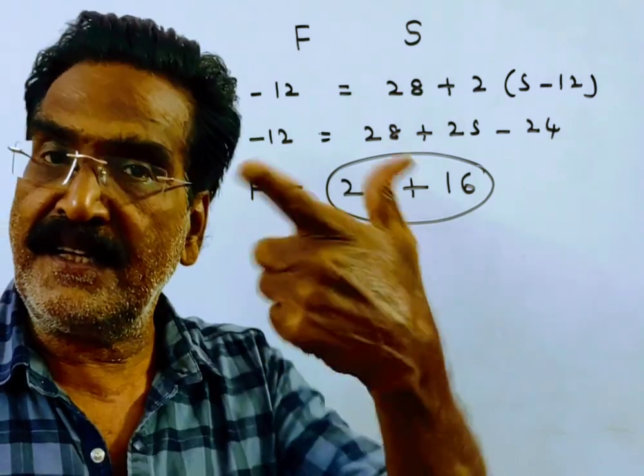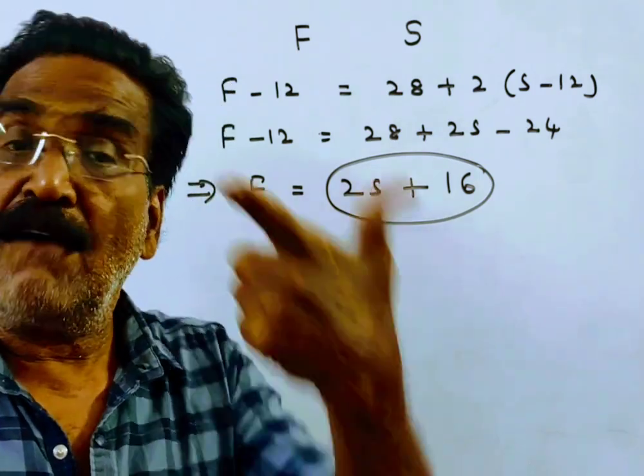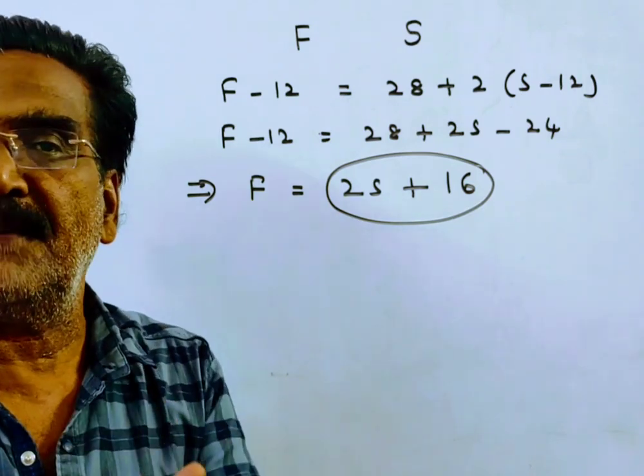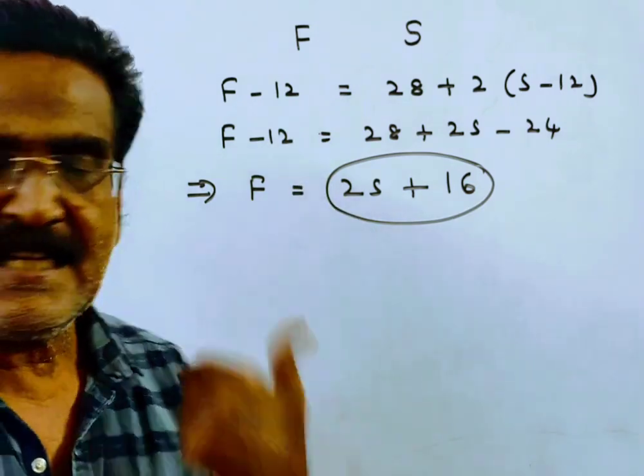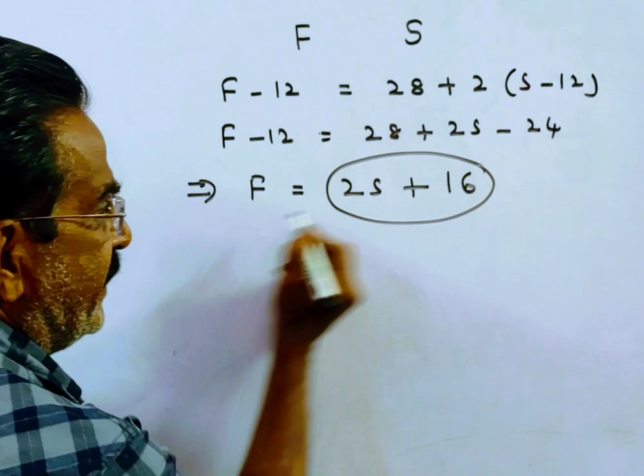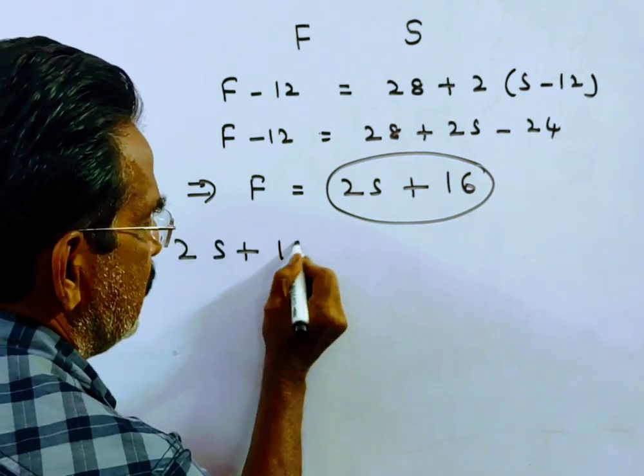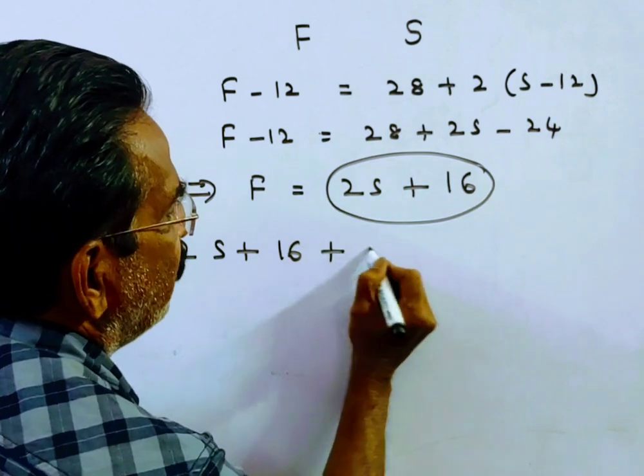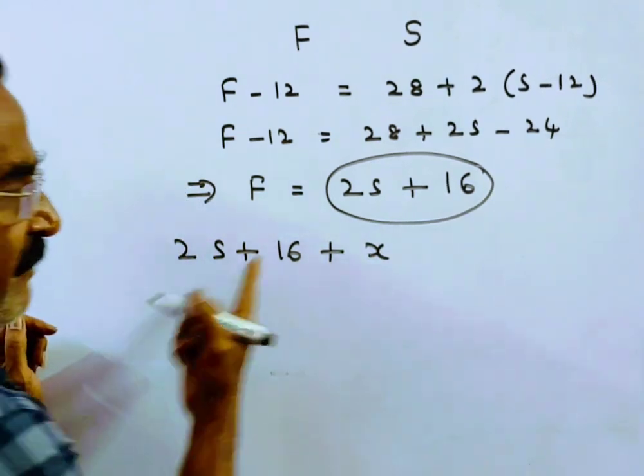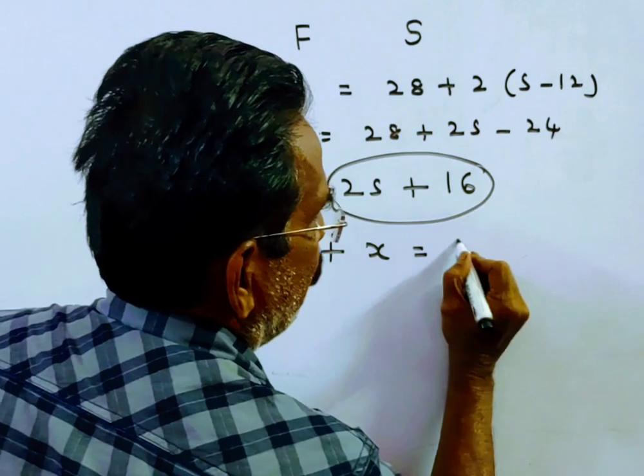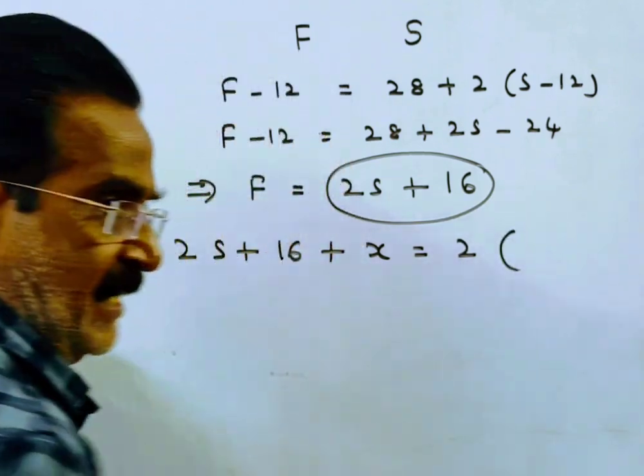Say, after X years, father will be twice the age of his son. So, after X years, 2S plus 16. This is present age. After X years, father will be twice the age of his son.